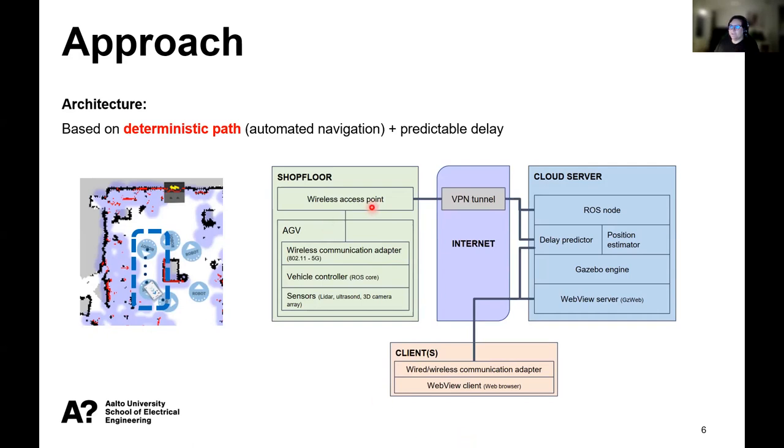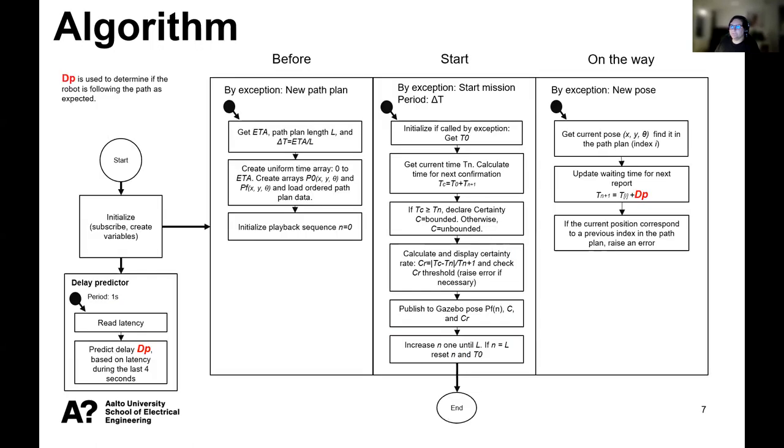We have four main components in our architecture. In the shop floor, we have the robot that has a path planner. Then we connect the path planner and the post report to a closed server via VPN or internet. In our closed server, we host our delay predictor and position estimator, which are our algorithms. We provide the visualization to Gazebo engine and GZweb. The clients can render it to a web browser remotely.